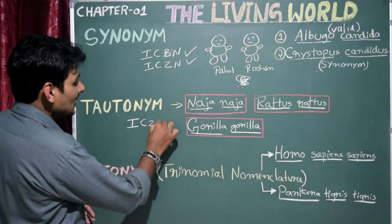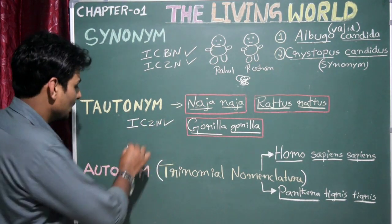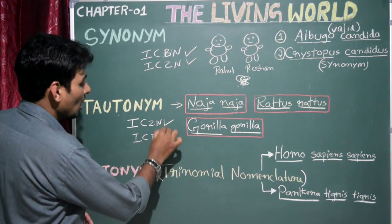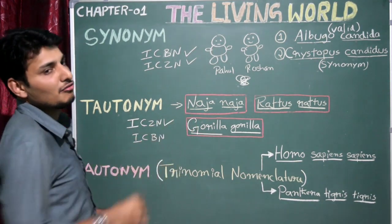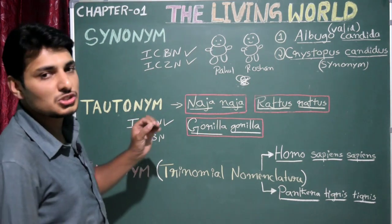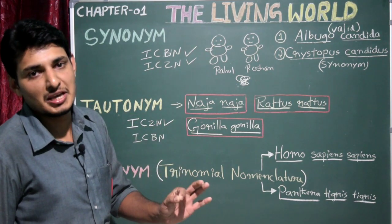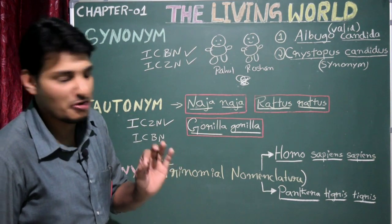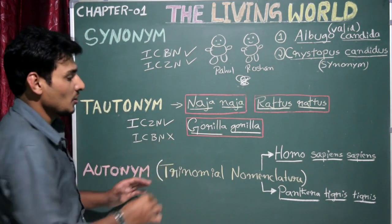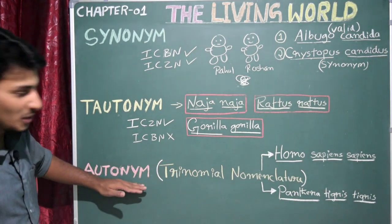ICZN gives permission to use tautonyms, whereas ICBN will not allow this kind of rule — meaning you cannot use tautonyms in plant names. This is very important to remember.